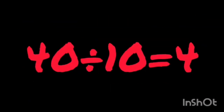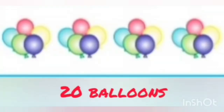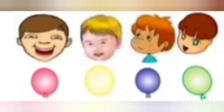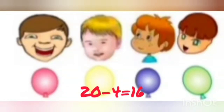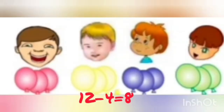Another question: 20 divided by 4. We have 20 balloons and will distribute them equally among 4 kids. Take 4 balloons and give 1 balloon to each child. 20 minus 4 is 16; 16 balloons are left. Again we take 4 balloons and give 1 balloon to each of them. 16 minus 4 is 12; 12 balloons are left.